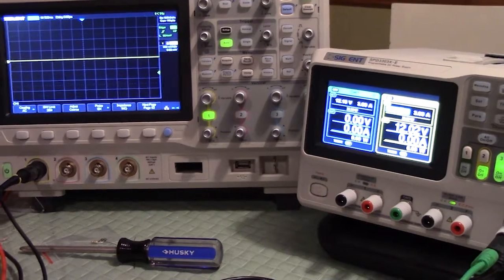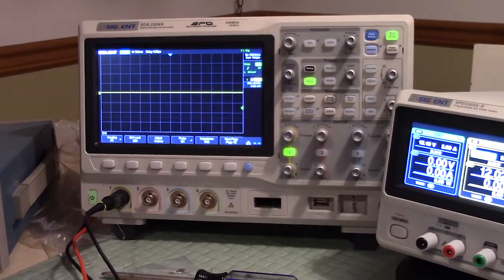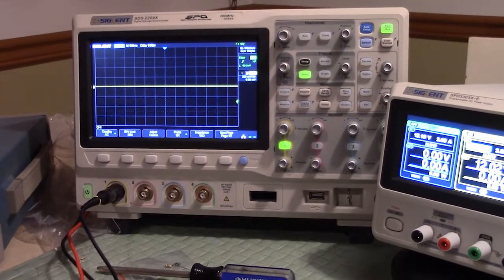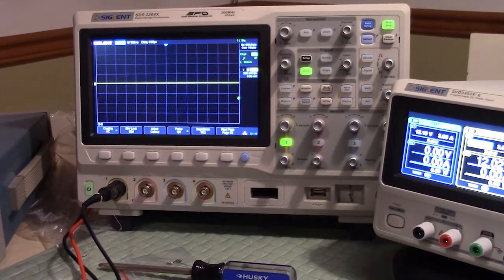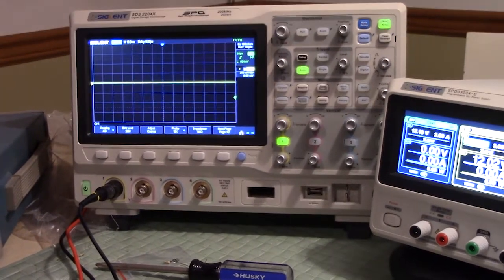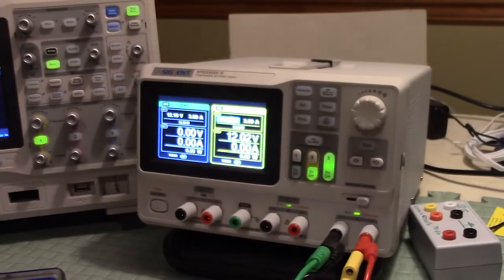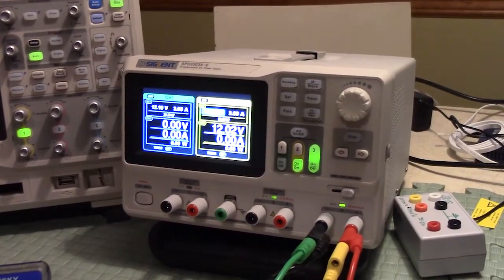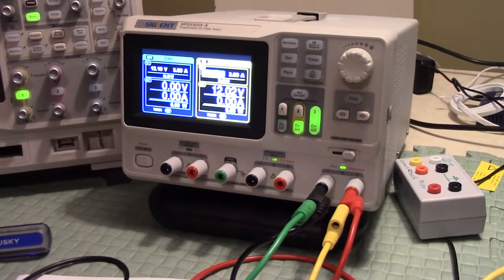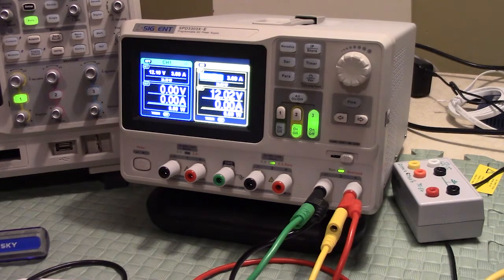Presently we have the 15 ohm resistor tied across the 5 volt power supply and we're seeing no ripple. The scope is set to 10 milliseconds per division and 200 millivolts per division and there's like no ripple at all and there's very little degradation in the output voltage.